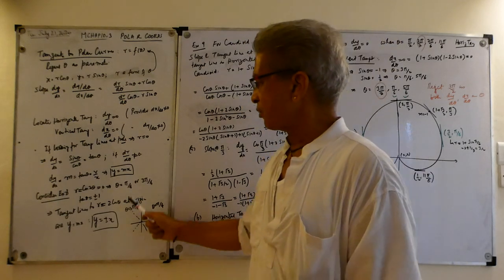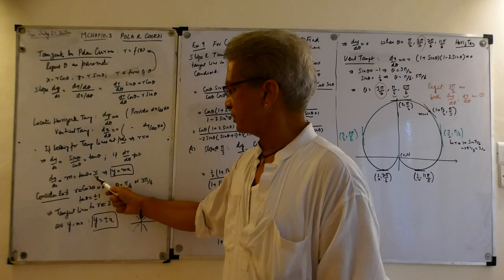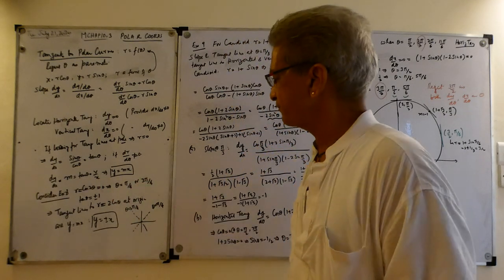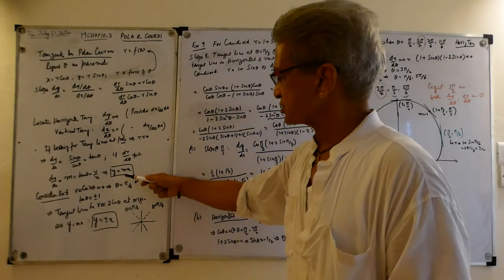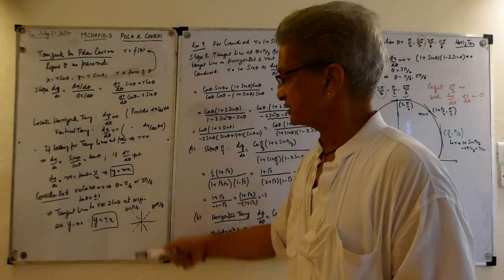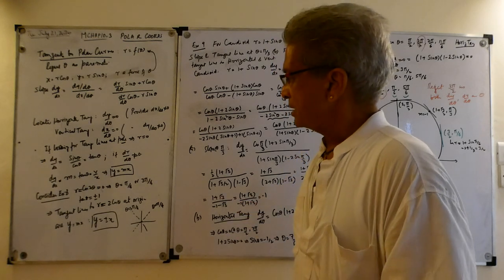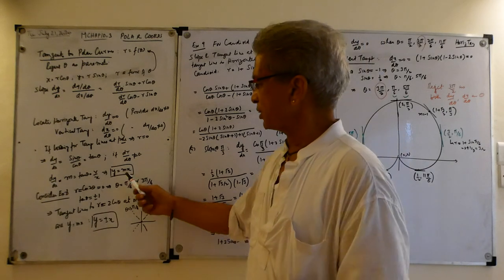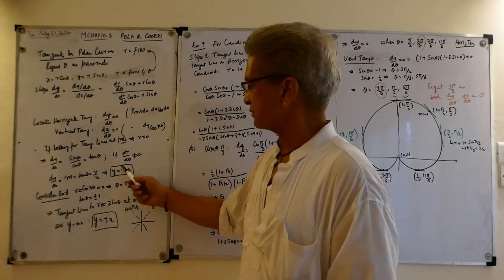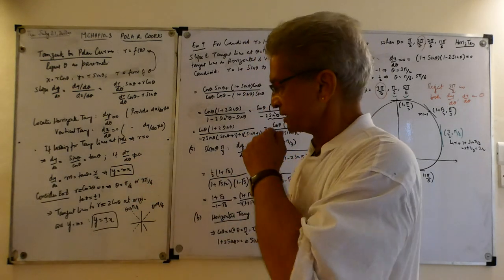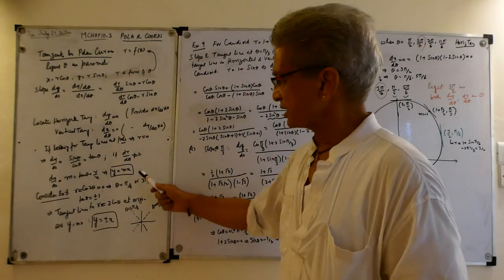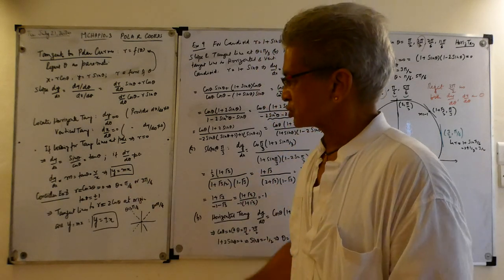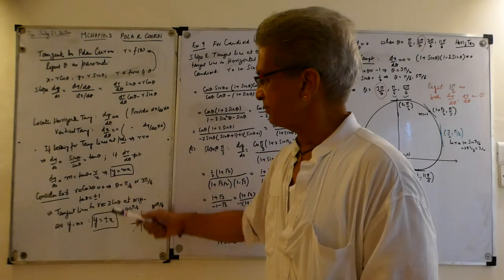In Cartesian coordinates, you have the equation y equals mx, which is the equation that passes through the origin. So in polar coordinates, you can calculate m by substituting θ, and this gives you the slope of the tangent lines at the pole.